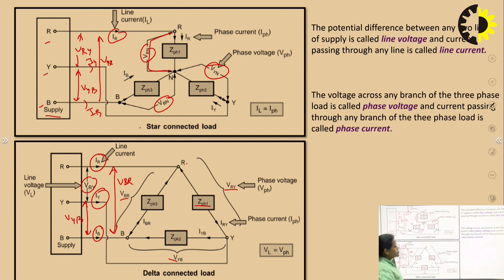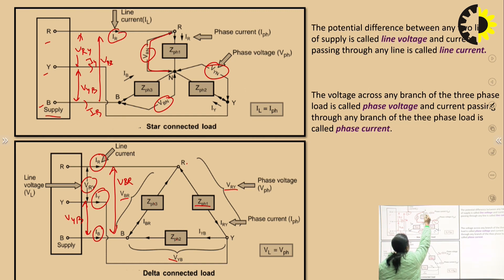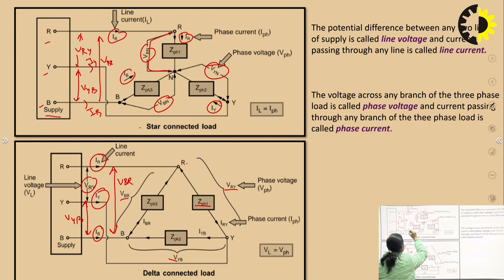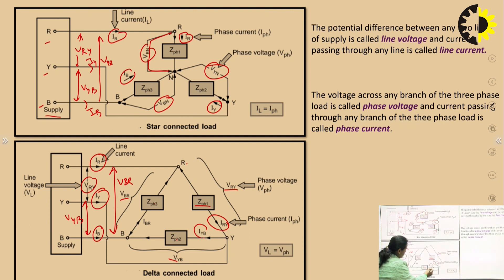Phase current is the current passing through any branch of the three-phase load. In star connection, IR, IY, IB flowing through each branch are phase currents. In delta connection, the currents flowing through each branch are IRY, IYB, and IBR — these are the phase currents. So the key difference is: line quantities refer to the lines, while phase quantities refer to the load branches.